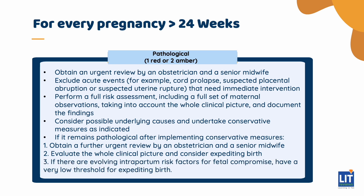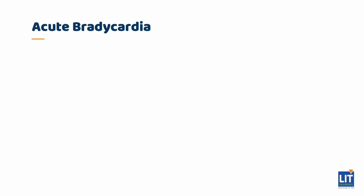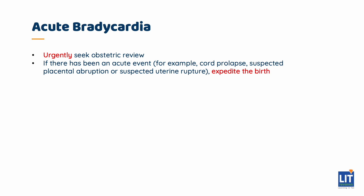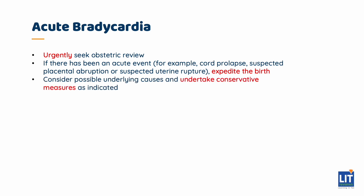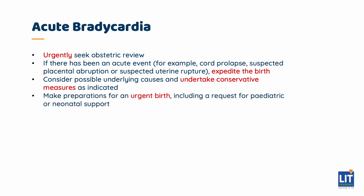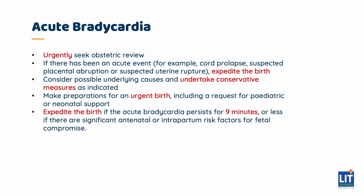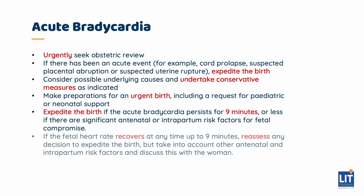If there are evolving intrapartum risk factors for fetal compromise, have a very low threshold for expediting birth. In acute bradycardia or a single prolonged deceleration for 3 minutes or more, urgently seek obstetric review. If there has been an acute event such as cord prolapse, suspected placental abruption, or suspected uterine rupture, expedite the birth. Make preparations for an urgent birth, including a request for paediatric or neonatal support. Expedite birth if the acute bradycardia persists for 9 minutes, or less if there are significant risk factors. If the fetal heart rate recovers at any time up to 9 minutes, re-assess the decision to expedite birth, taking into account other risk factors and discussing with the woman.